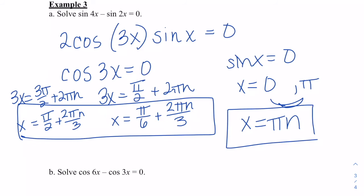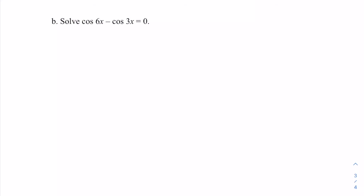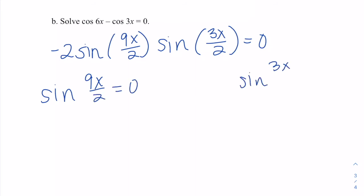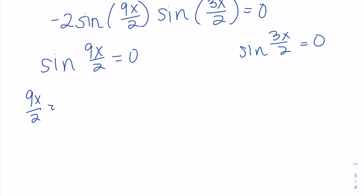Now solve cosine of 6x minus cosine of 3x equals 0. Again, we're changing this difference into a product: −2 times sine of (6x + 3x)/2 = 9x/2, times sine of (6x − 3x)/2 = 3x/2, equals 0. Setting the first factor equal to 0: sine of 9x/2 = 0, so 9x/2 = 0 + 2πn, giving x = 4πn/9.